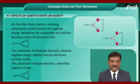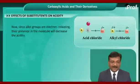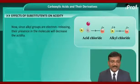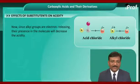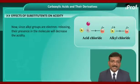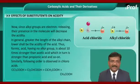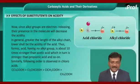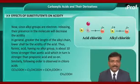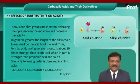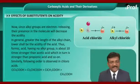Since alkyl groups are electron-releasing, their presence in the molecule will decrease the acidity. In general, the greater the length of the alkyl chain, the lower the acidity of the acid. Thus, formic acid, having no alkyl group, is about 10 times stronger than acetic acid, which in turn is stronger than propionic acid, and so on.